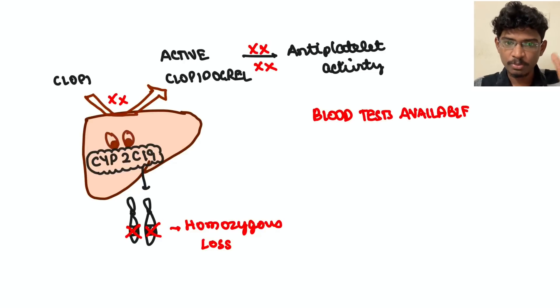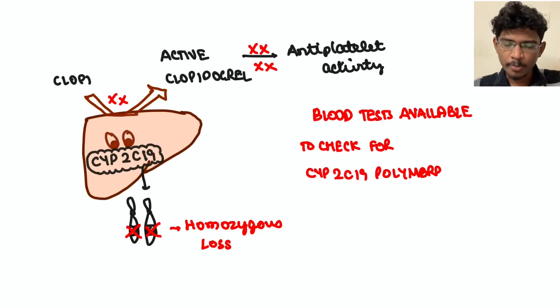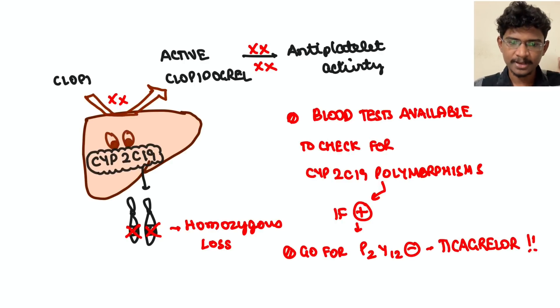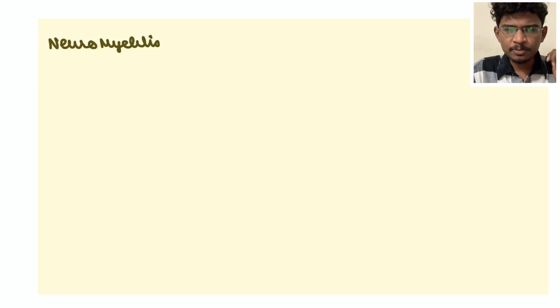So there are blood tests available now to check for the presence of this enzyme or not, polymorphisms. So if you find they don't have that enzyme, then better don't give clopidogrel. Go for some P2Y12 inhibitors like ticagrelor, cangrelor - all these things can be tried in place of clopidogrel. Neuromyelitis optica: all are diagnostic criteria except?